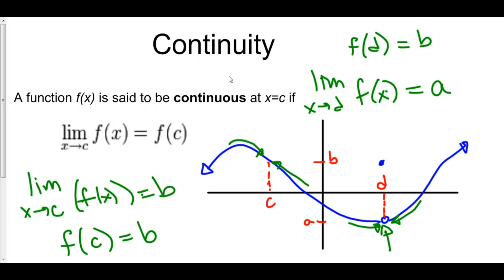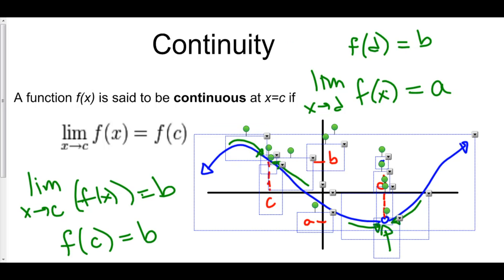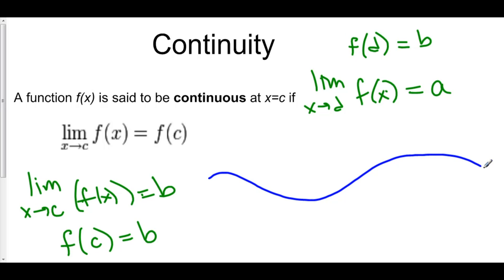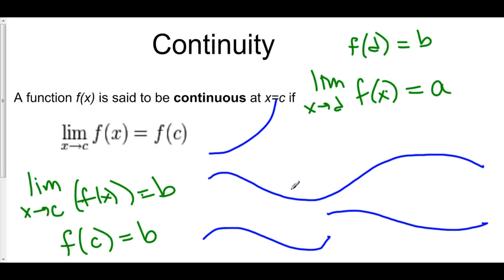To put this in plainer terms, here's how you can think about continuity. If you can write down a function without picking up your pen, it's continuous. However, if at some point you have to pick up your pen — for example, if you have a line and you pick it up and start somewhere else — that's not continuous. Or if you have an asymptote, you had to pick up your pen, so it's not continuous. Imagine you're riding a roller coaster: if you survive, your function is continuous. If you fly off, it's not continuous.